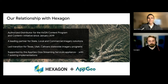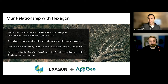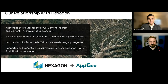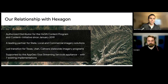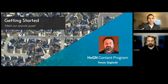AppGeo is a geospatial consulting firm based in Boston, Massachusetts. We've been at this for about 30 years, just slightly longer than I've been alive. Hexagon is one of the preeminent providers of imagery in the entire world, and Hexagon has been working with AppGeo since about 2019. In that partnership we've had the great pleasure of working with a number of states and agencies, combining the best data with the best people to help implement it into your workflows and applications.